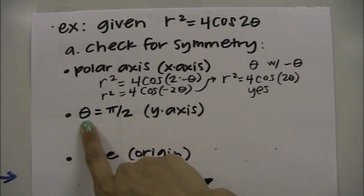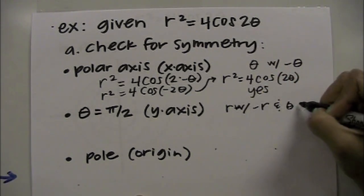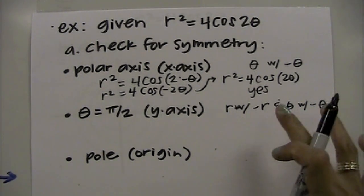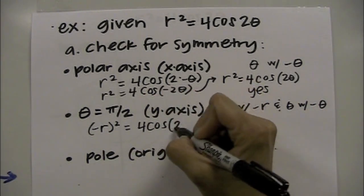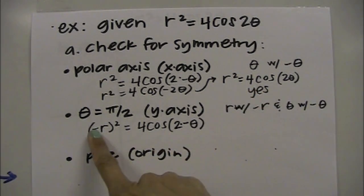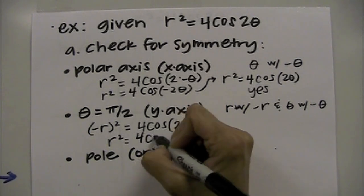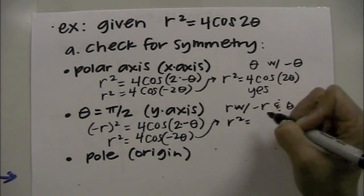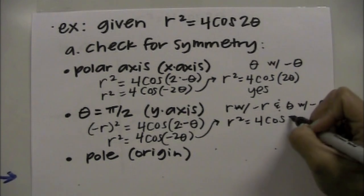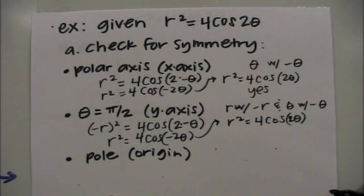Next, check symmetry about the line θ equals π/2 by replacing r with negative r and θ with negative θ. Squaring negative r gives positive r², and cosine of negative 2θ equals cosine of 2θ since cosine is even. The resulting equation is the same as the original, so it does have y-axis symmetry.